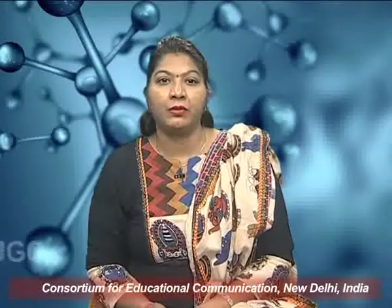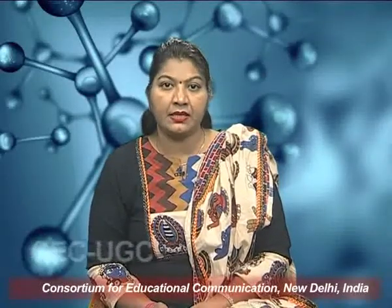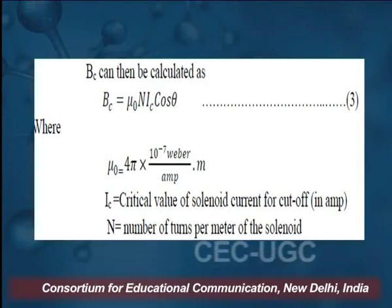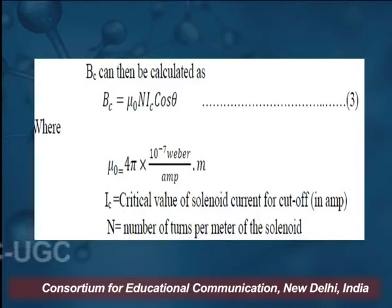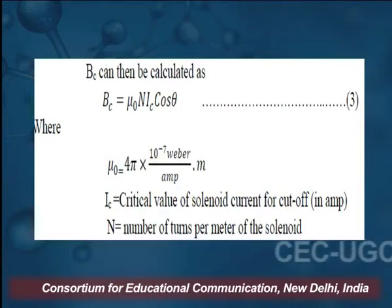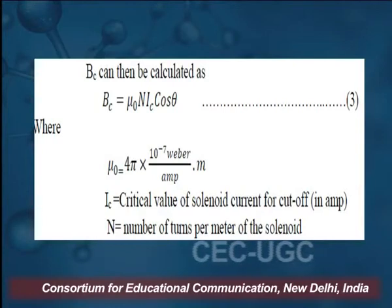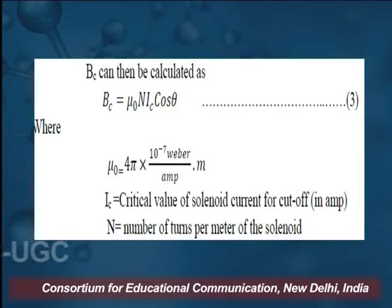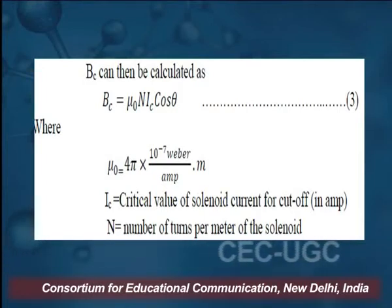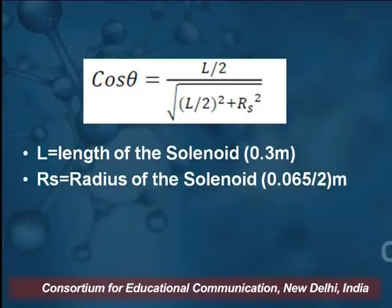Bc can be calculated using the formula Bc = μ₀ × N × Ic × cosθ, where μ₀ is 4π × 10⁻⁷ T·m/A, Ic is the critical value of the solenoid current for cut-off in amperes, and N is the number of turns per meter of the solenoid. N is fixed as it is customized from the setup, so from here we can get the value of Bc.